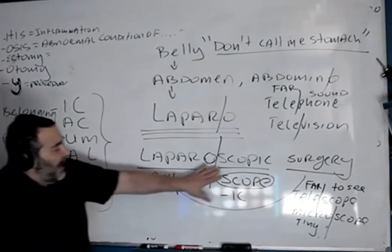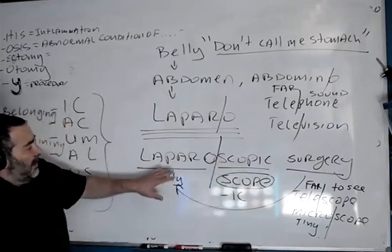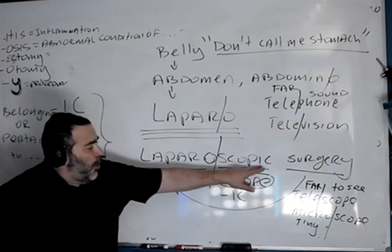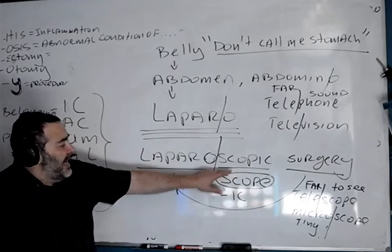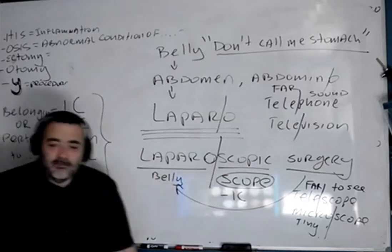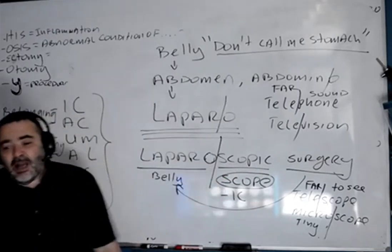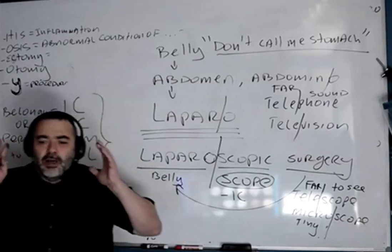So what is laparoscopic? Well, it literally means belonging to seeing the belly. That's a laparoscopic procedure. Whatever the case may be, we're using some kind of a device — whether it's a telescope, microscope, or whatever — and we're going to talk about these things because we're going to see a device called an endoscope.